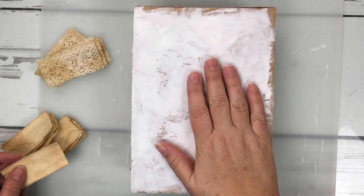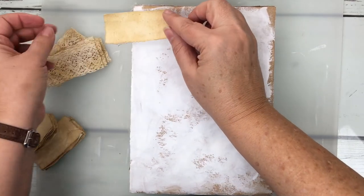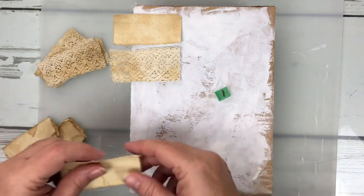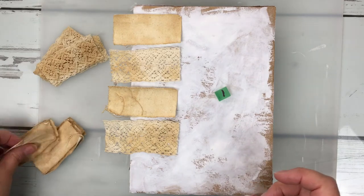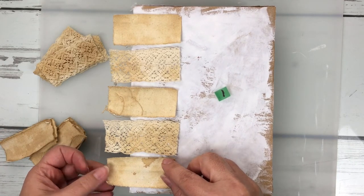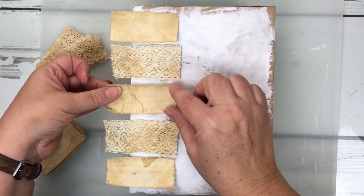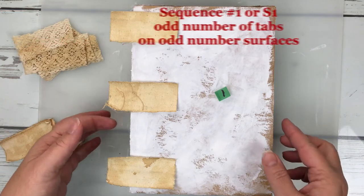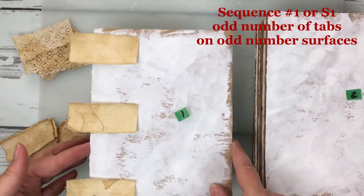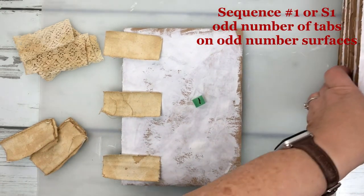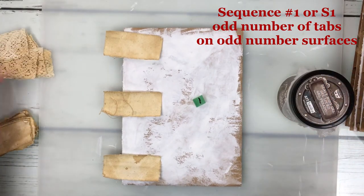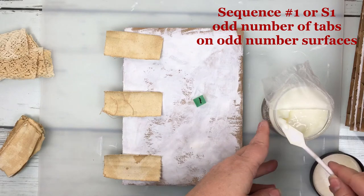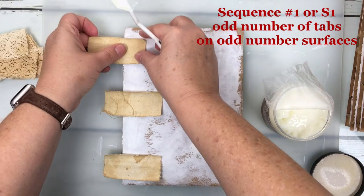The pages are all gessoed and I have pulled out all my tabs. The first thing I'm going to do is show you that we are working in two different sequences. The page labeled number one or the surface labeled number one will be in sequence one. Sequence one pages will be odd numbers. The surfaces labeled two will be in sequence two or S2. S2 pages will all be even numbered. Since I'm doing my odd numbers in canvas, sequence one will be odd numbered pieces of canvas. Here I am adhering my canvas tabs down onto surface number one. You want the odd number to start at the top and make sure one is at the bottom.